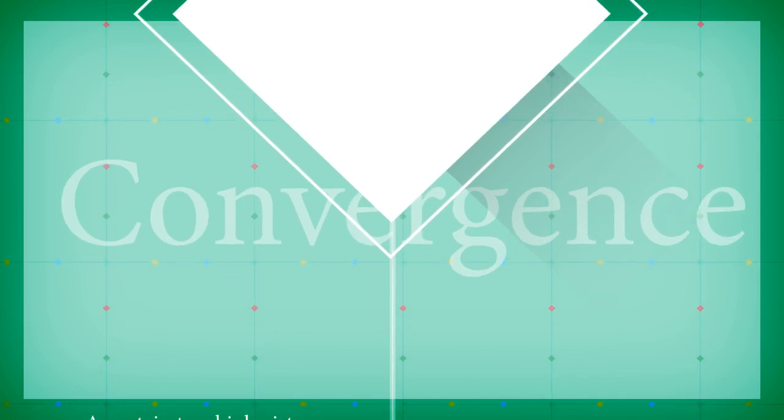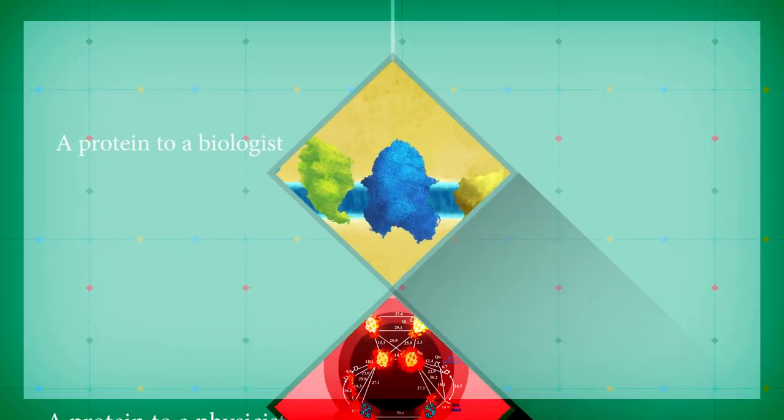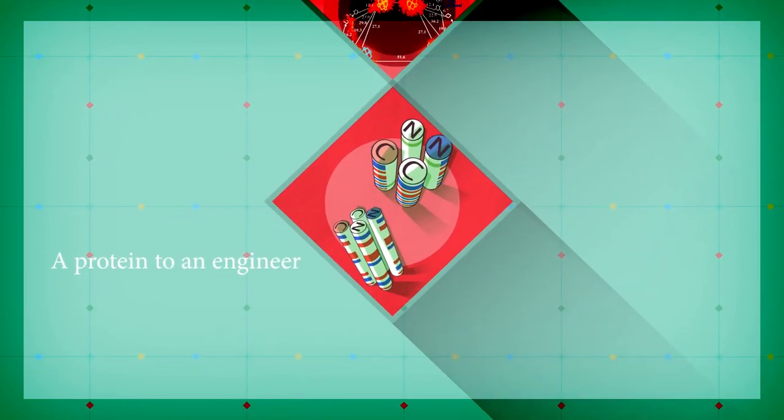Convergence takes advantage of many different points of view. To a biologist, a protein may look like this. But to a physicist, it looks like this. And to an engineer, it looks like this.